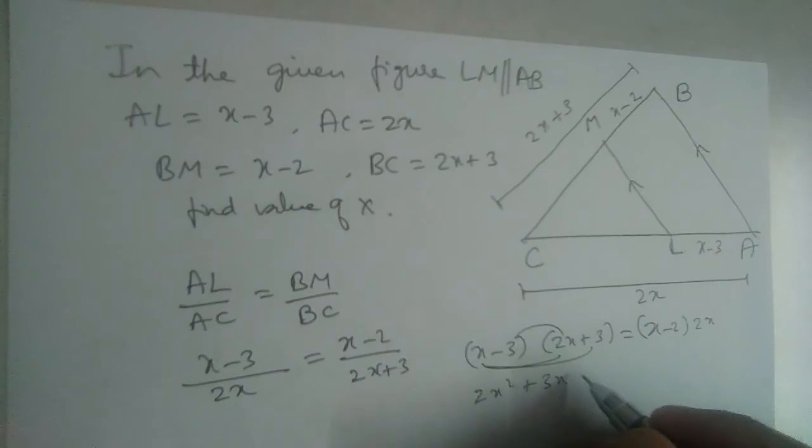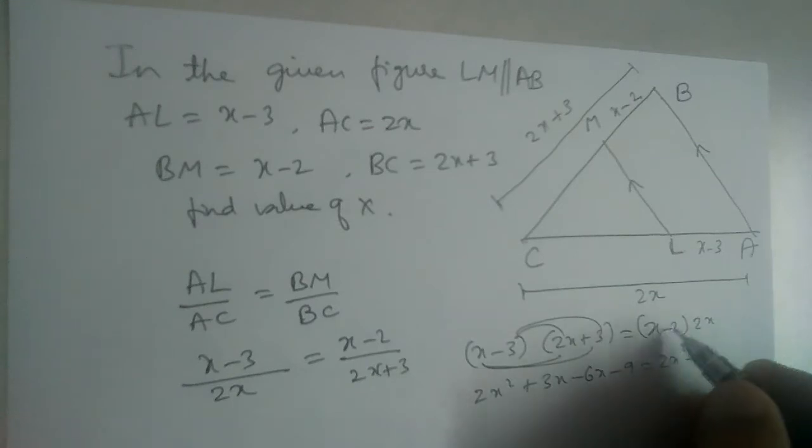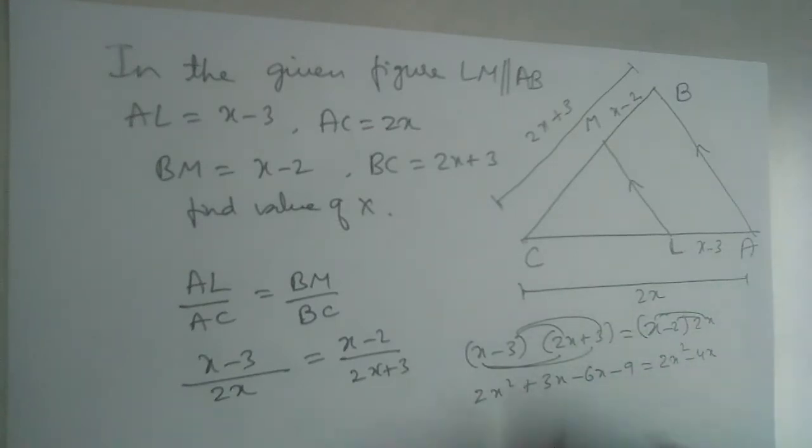2x squared minus 4x, like this. All right, let us simplify this. 2x squared, 2x squared will get cancelled. Now 3x minus 6x is minus 3x, minus 9 is equal to minus 4x.